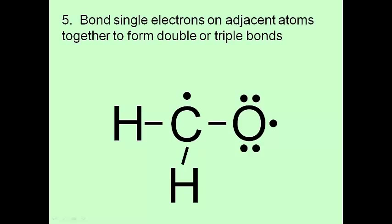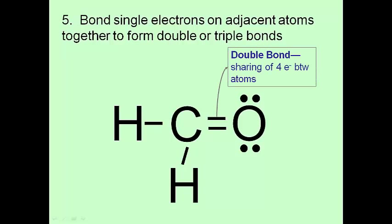Here's what I'm going to do. If I have single dots on adjacent atoms. Adjacent means atoms that are already connected to each other. I can form multiple bonds. So double or triple bonds. So let's move those electrons. I'm going to slide that one out of the way. And I'm going to move those so that they now appear in the middle. And then, of course, those two dots become a line. And this is now what's called a double bond. And a double bond is a sharing of four electrons between the atoms. So a single bond was a sharing of two electrons. A double bond is a sharing of four electrons.